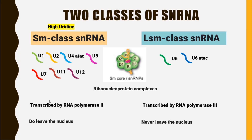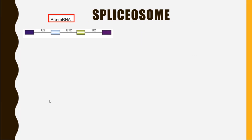All these snRNAs — both Sm class and LSM class — along with their proteins, form a complex called the spliceosome. In pre-messenger RNA, the box-type structures represent coding regions called exons, and the line-type areas represent non-coding regions called introns. The function of the spliceosome is to remove introns from pre-mRNA to make it mature messenger RNA.